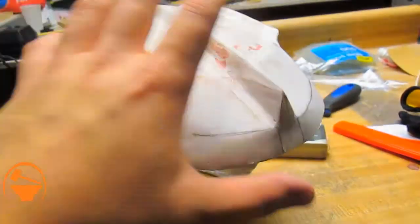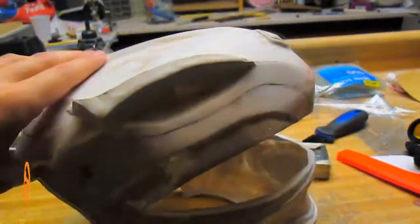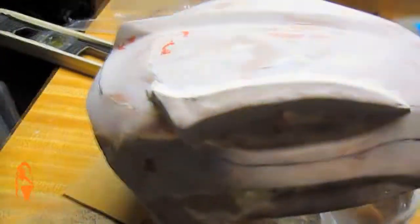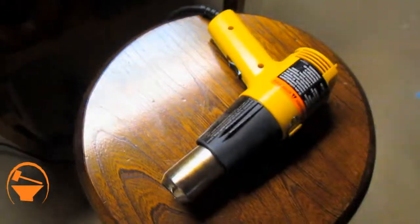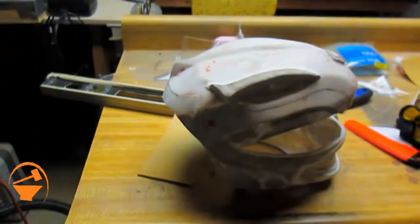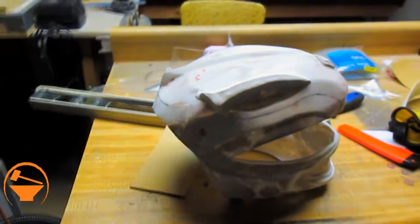So I'm going to try something new. So I just sculpted it directly on the helmet again, and I'm going to try taking my heat gun to it and seeing if I can cook it while it's on there. So I'll let you know how that goes.